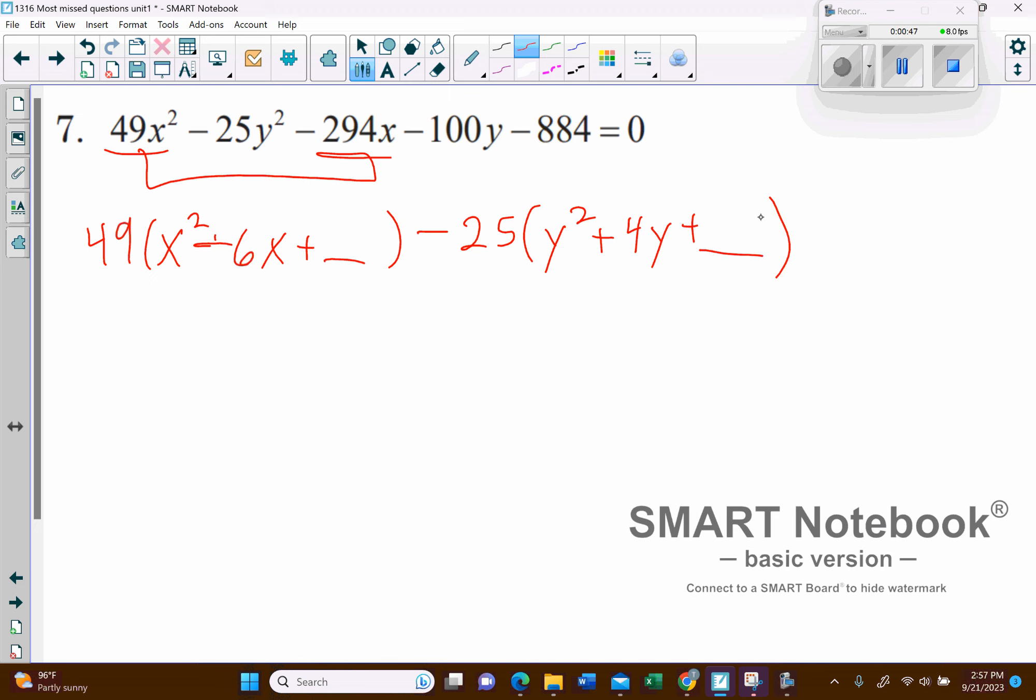And then if we want to, we can go ahead and move the 884 to the other side, so it'll become a positive 884. And then I'm also going to have to add whatever I add to both sides to complete the square process.